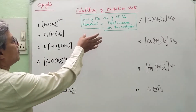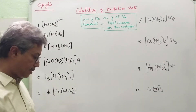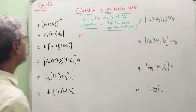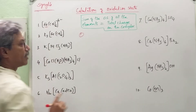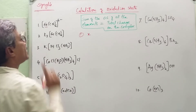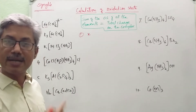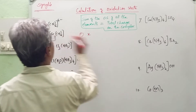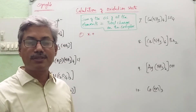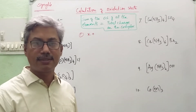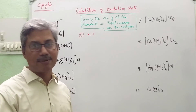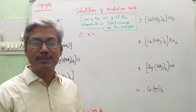Let us apply this formula for all the examples. Let the oxidation state of the metal be x. We should know the charges of ligands. There are following types of ligands: neutral ligands, positively charged ligands, and negatively charged ligands. You should know this basic information.